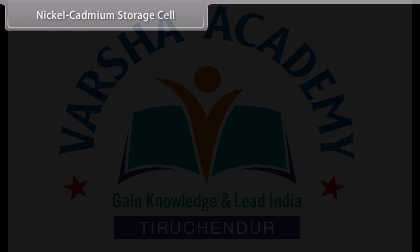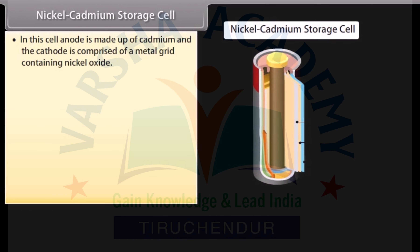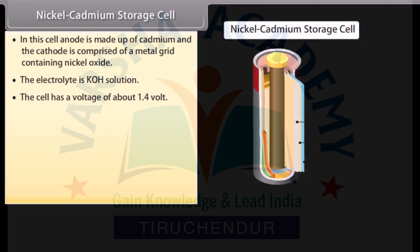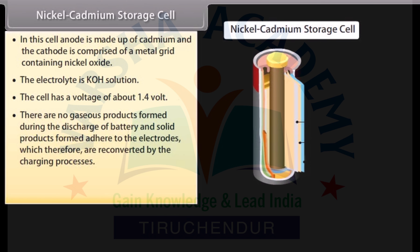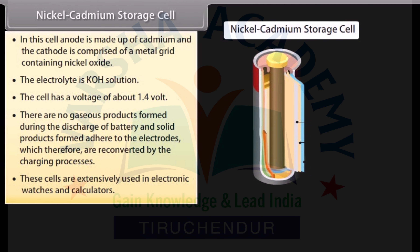Nickel-cadmium storage cell. The anode is made of cadmium and the cathode is comprised of a metal grid containing nickel oxide. The electrolyte is KOH solution. The cell has a voltage of about 1.4 volts. There are no gaseous products formed during discharge; solid products adhere to the electrodes and are reconverted by the charging process. These cells are extensively used in electronic watches and calculators.